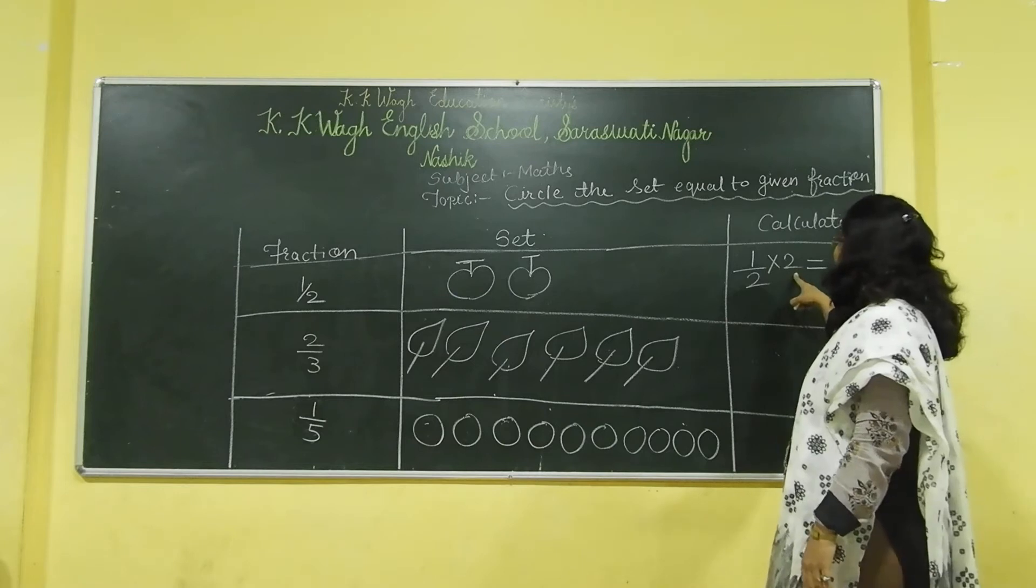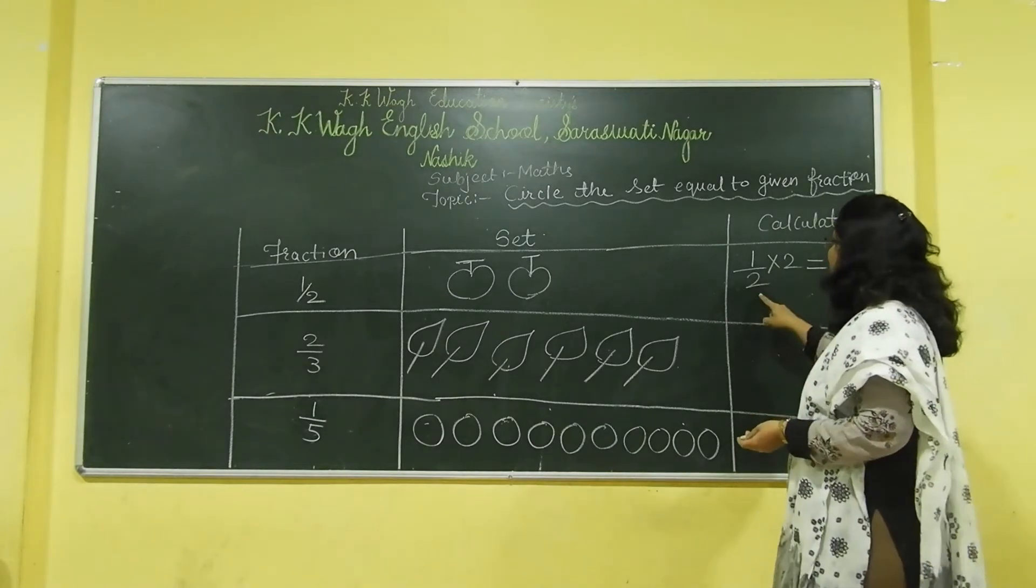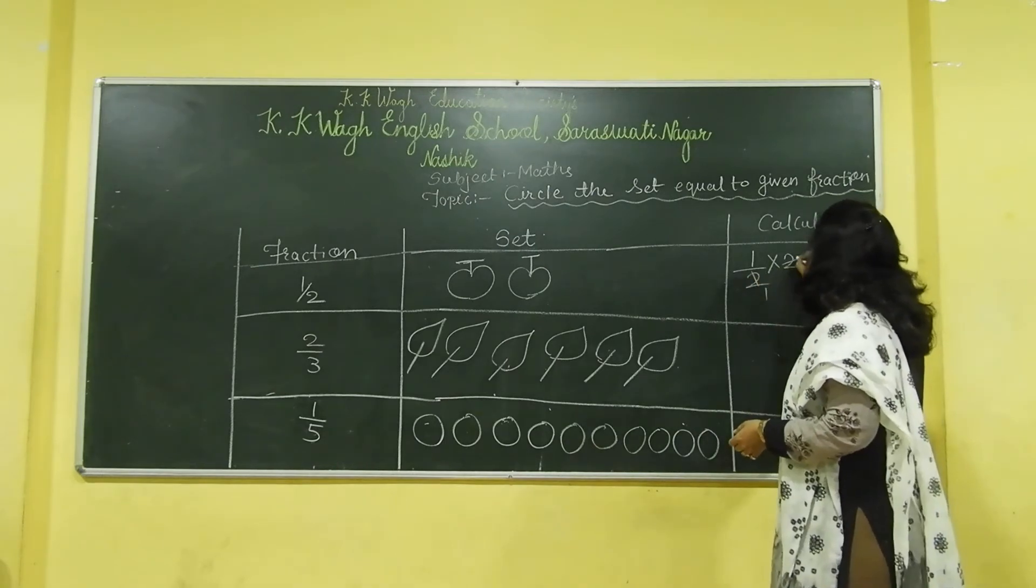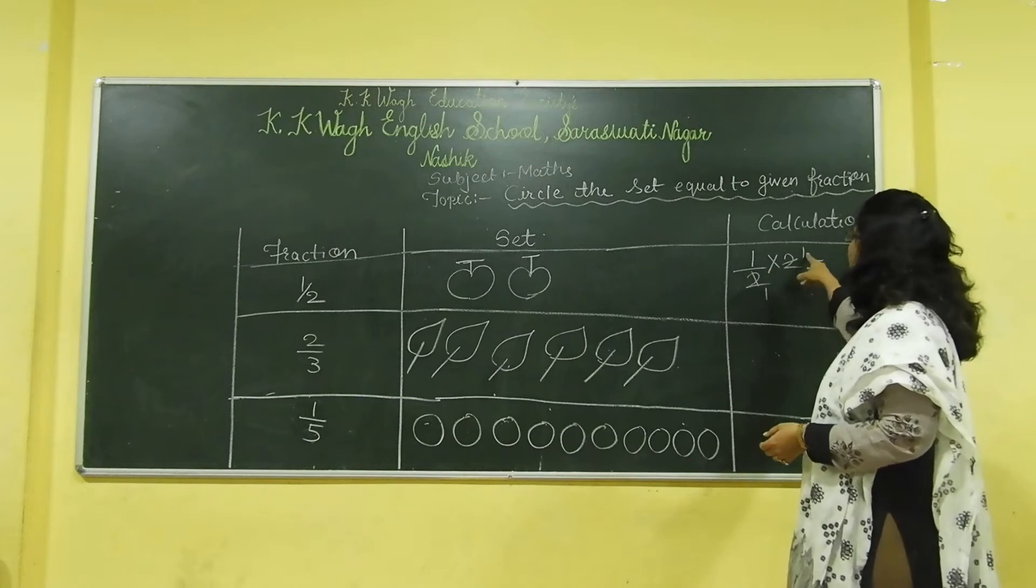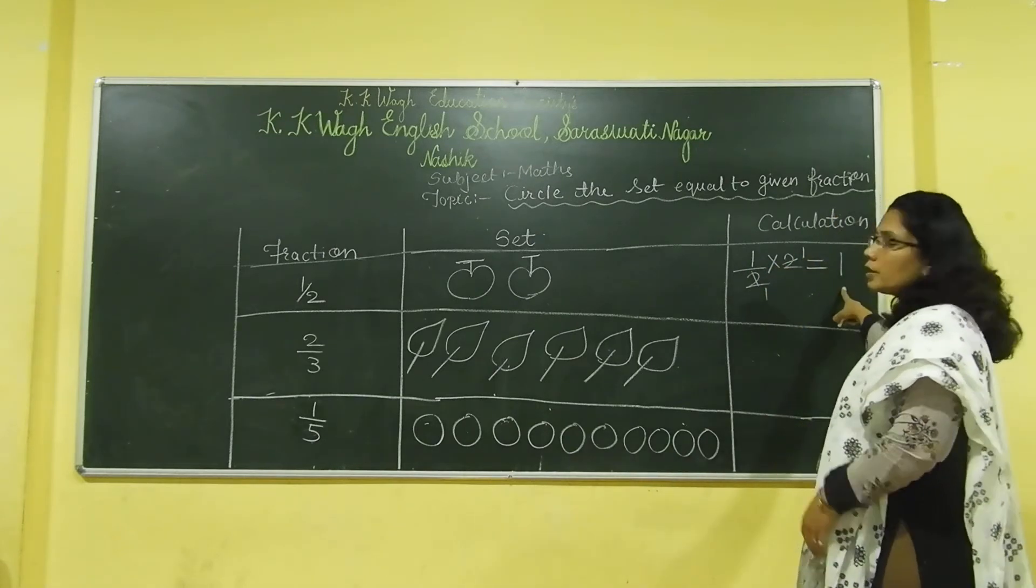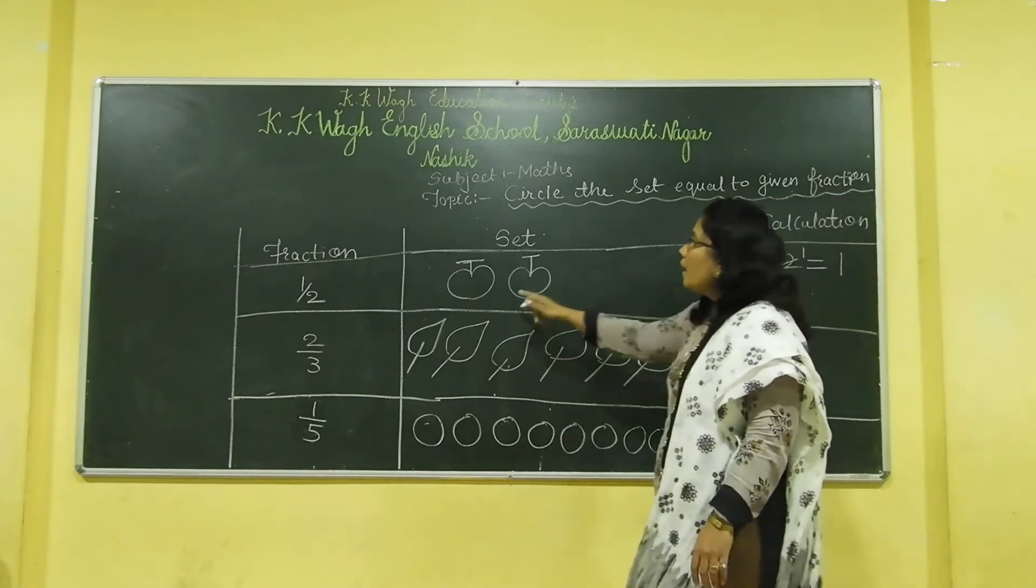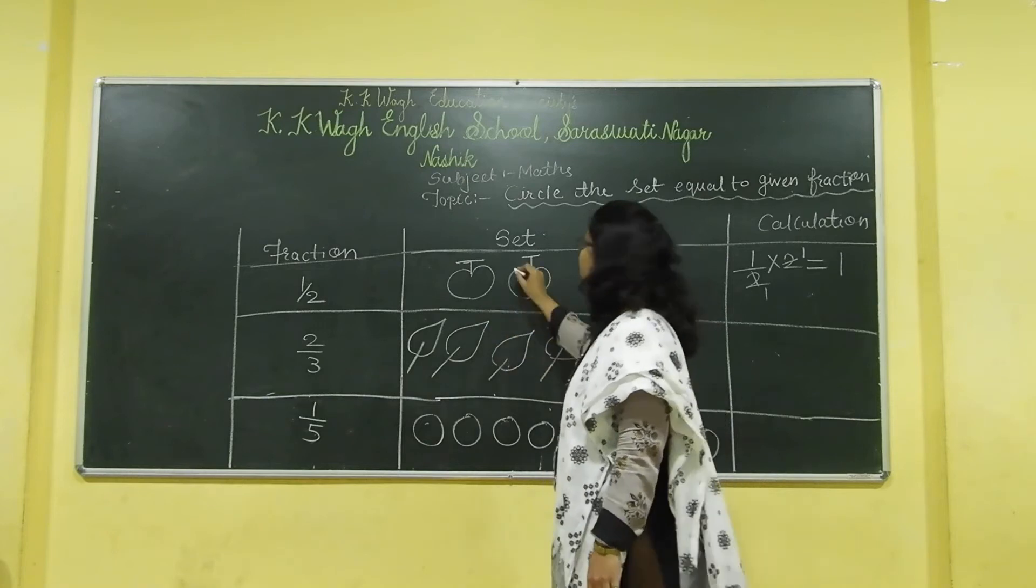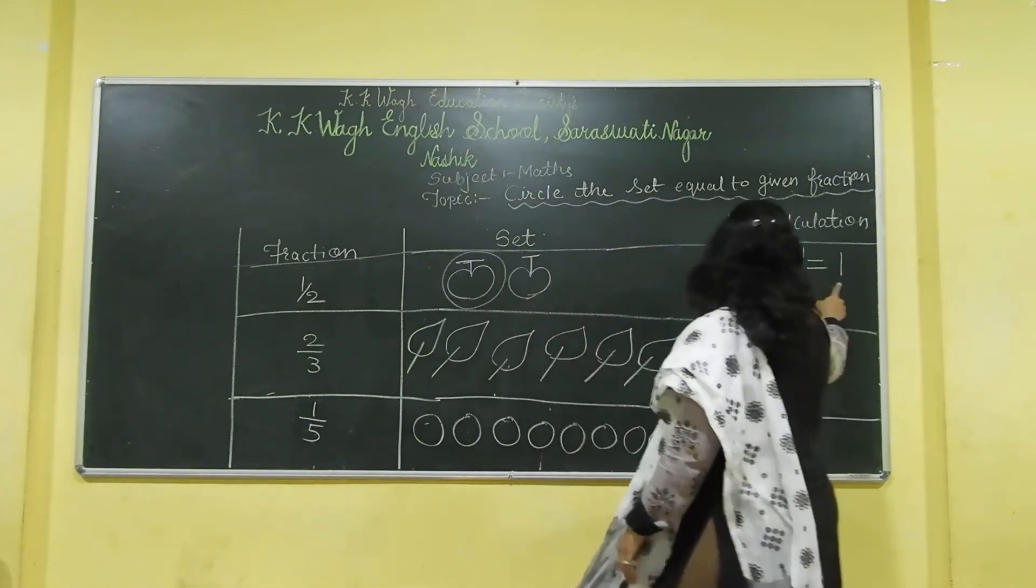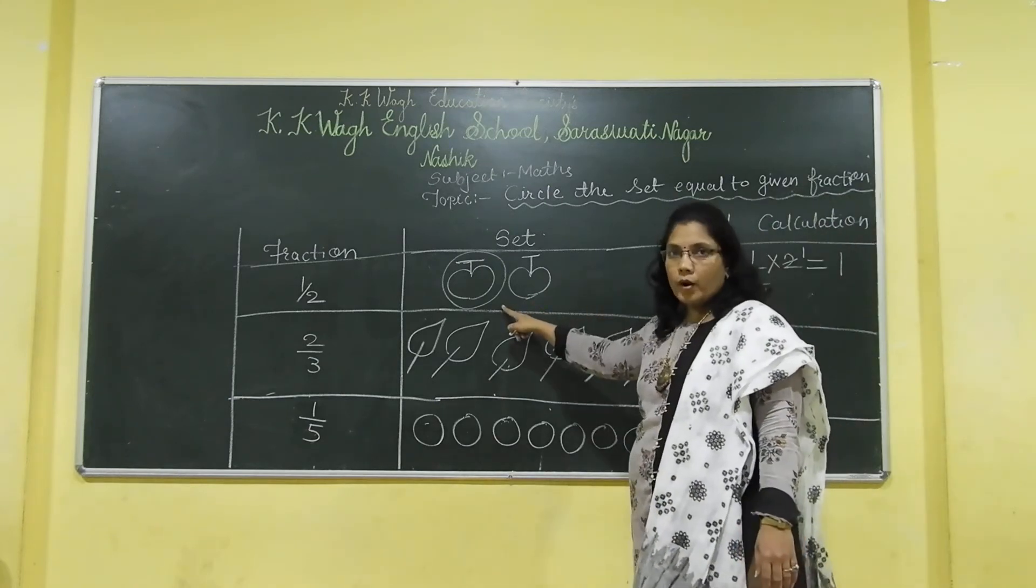If we multiply this number according to the rule, the 2 and 2 get cut. Because, 2 1s are 2. 1 into 1, 1 1s are 1. So, we have got the answer 1. We have to circle the half of these two apples. Half of 2 is 1. And in the same way, with the help of this calculation, it will become easy.